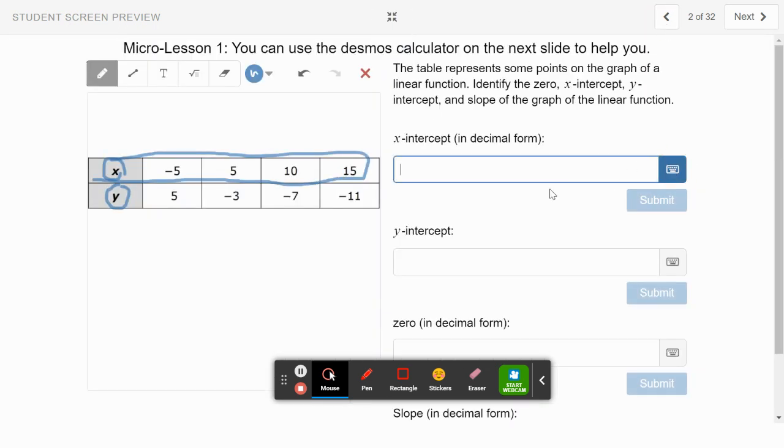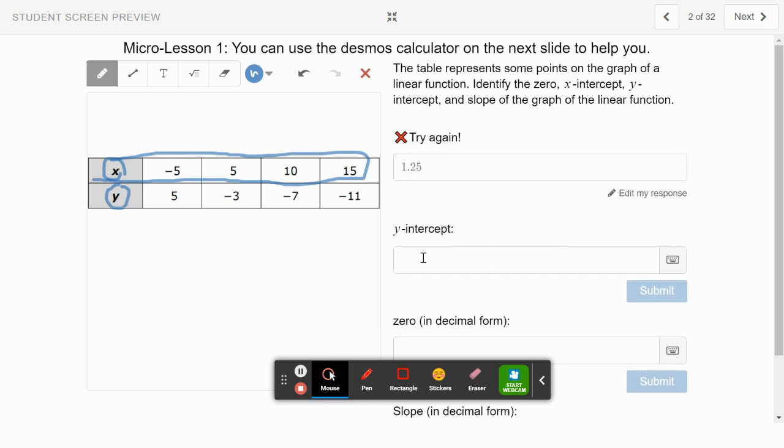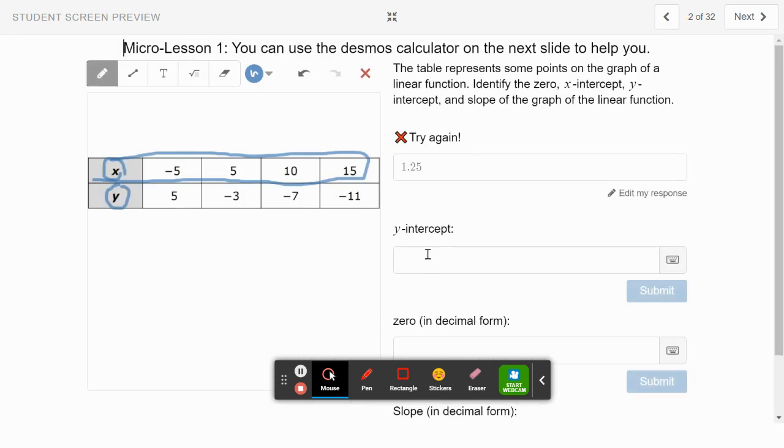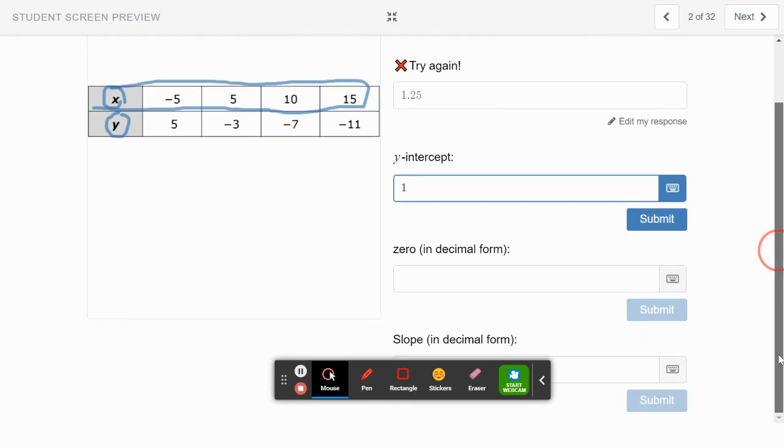I'm going back. My x-intercept was 1.25. The y-intercept—when the x value is 0—is 1. It's the same as this b value, which is 1. So we put in the y-intercept as 1 and 0.